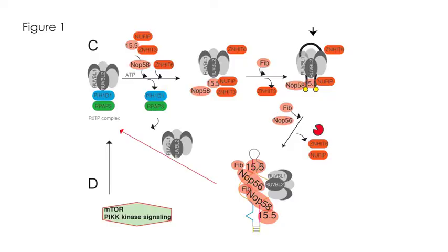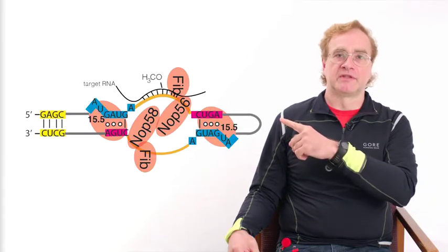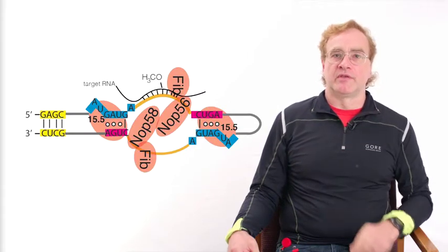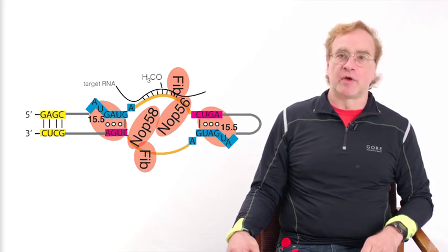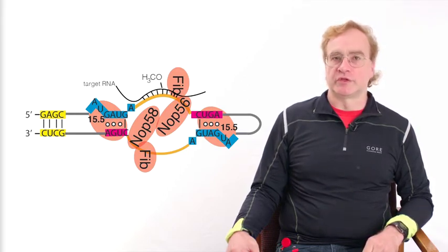The R2TP complex acts as a chaperone. That means it helps fold and unfold proteins to be able to bind on the RNA. So the final product is the snoRNA where the snoRNA has two functions. Number one, it forms a scaffold for these proteins.